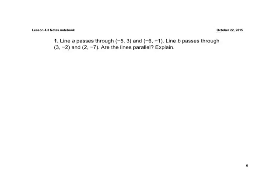Now, they give us two points here. They say line A passes through (-5, 3) and (-6, 1). Line B passes through (3, -2) and (2, -7). Are they parallel? Well, we know parallel have to have the same slope, so let's just find the slopes very quickly.